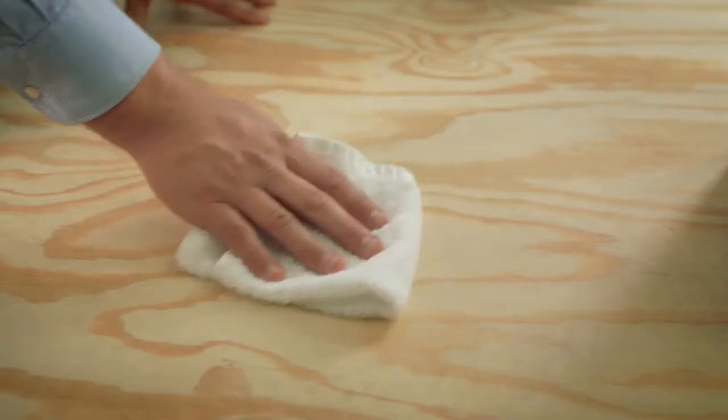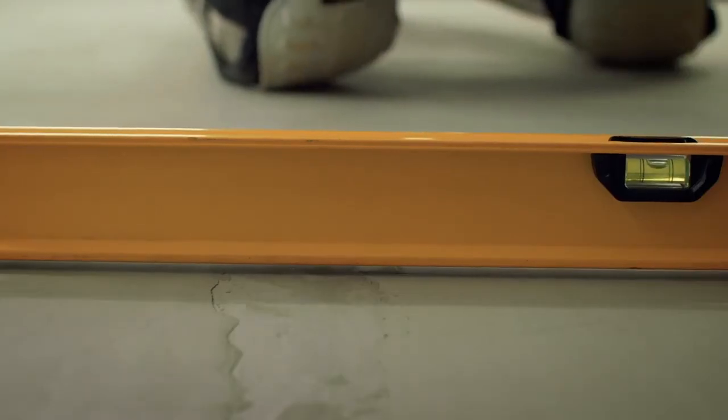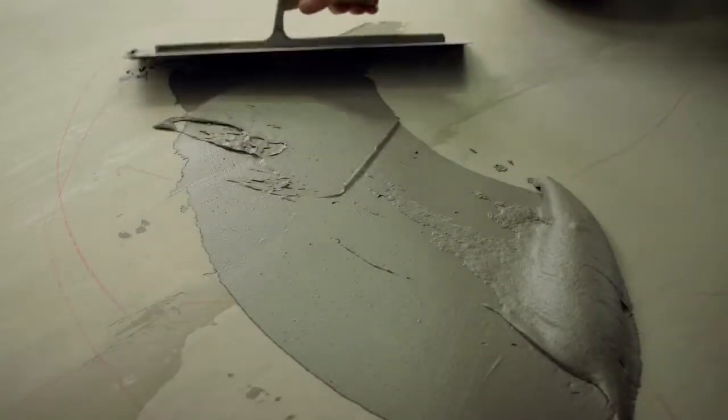Then, you'll want to make sure your subfloor is clean, flat, dry, and level within one-eighth of an inch in any six-foot section. If any spots exceed one-eighth of an inch, fill them in with a cement leveling compound.